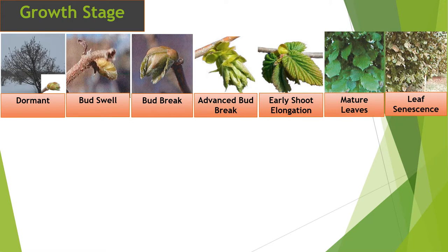Let's touch on growth stages of hazelnuts, which are very different from apples or other tree fruit. We have a dormant period — that is actually when most of the pollination takes place. For vegetative bud development, we want to focus on that because of Eastern Filbert Blight. The susceptible period for Eastern Filbert Blight occurs only when there is very actively growing tissue — that's the only area where spores can actively infect during a rain event. Bud Swell begins late April or earlier if it's warm, followed by Bud Break and Advanced Bud Break — that Advanced Bud Break stage is the most susceptible for Eastern Filbert Blight, continuing through to early shoot elongation.